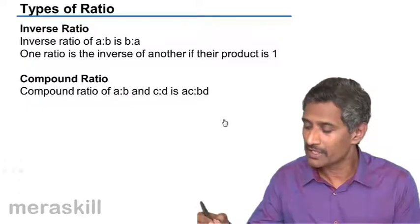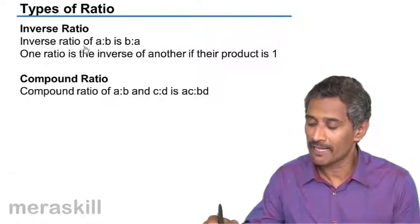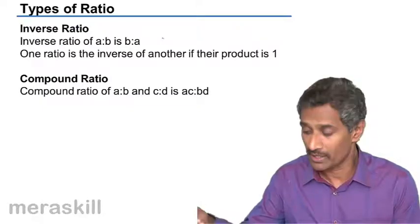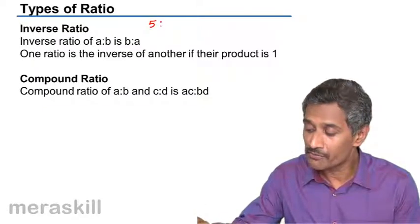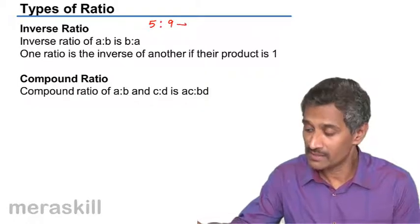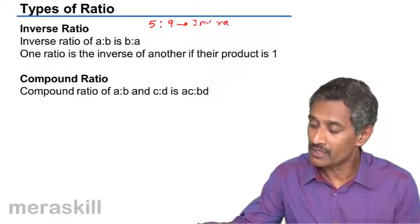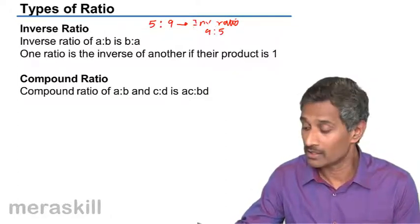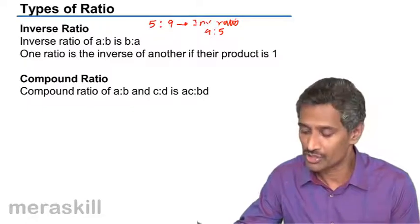Let's go again into inverse ratio. We have a case of inverse ratio: A is to B is B is to A. So what could be the inverse ratio of 5 is to 9? Its inverse ratio would be 9 is to 5. As said earlier, the consequent and antecedent are getting interchanged.